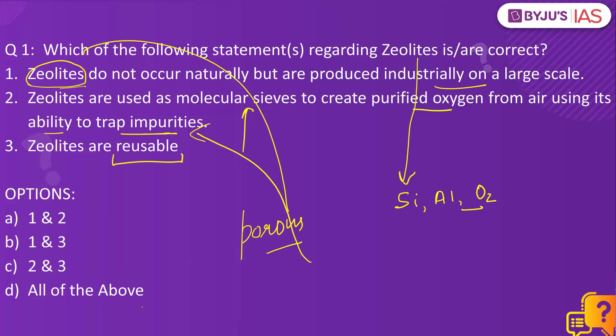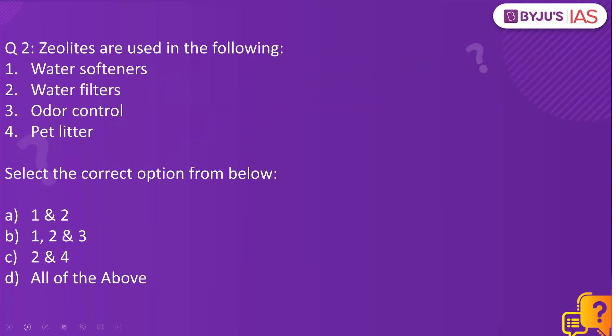So statement one is incorrect, and statements two and three are correct. The right answer is C — 2 and 3. Staying with zeolites, let's look at question number two.